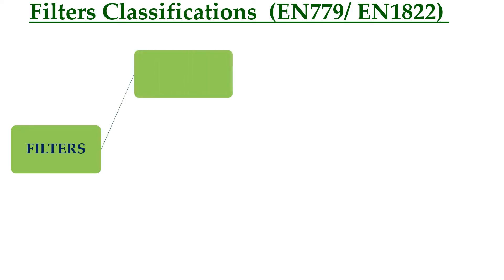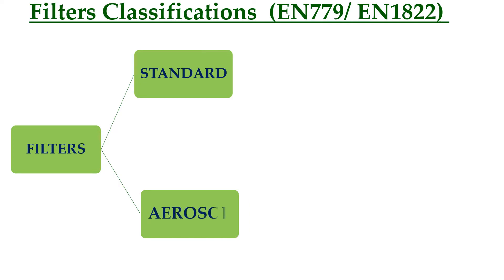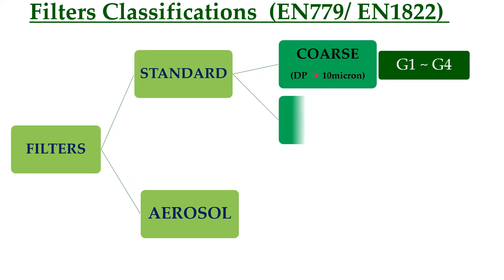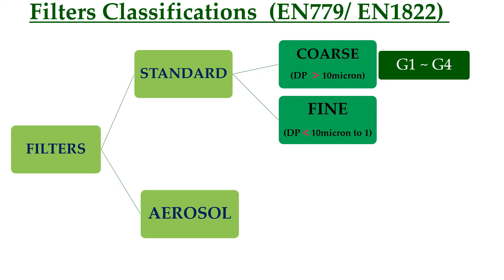Next, EN standard efficiency ratings. The classification is based on EN 779 and EN 1822. Filters are classified into two major categories: standard filters and aerosol filters. Standard filters are subdivided into coarse filters and fine filters. Coarse filters are G1 to G4, for dust particulates greater than 10 microns. Fine filters are F4 to F9, for dust particulates from 1 micron to 10 microns.